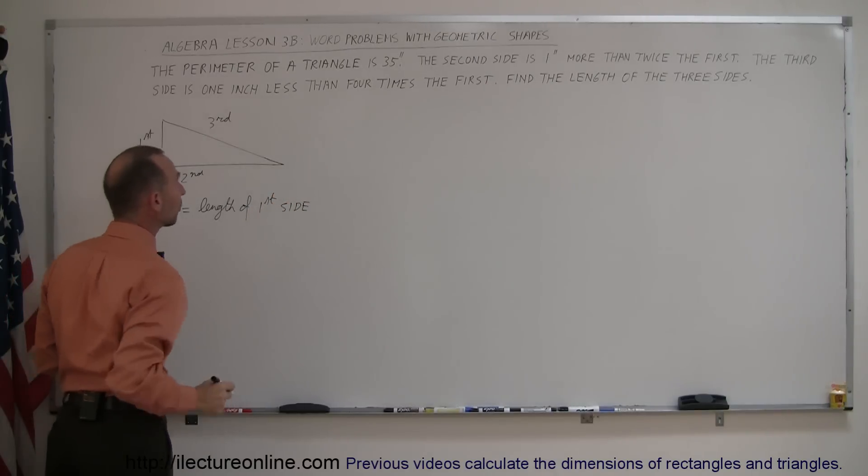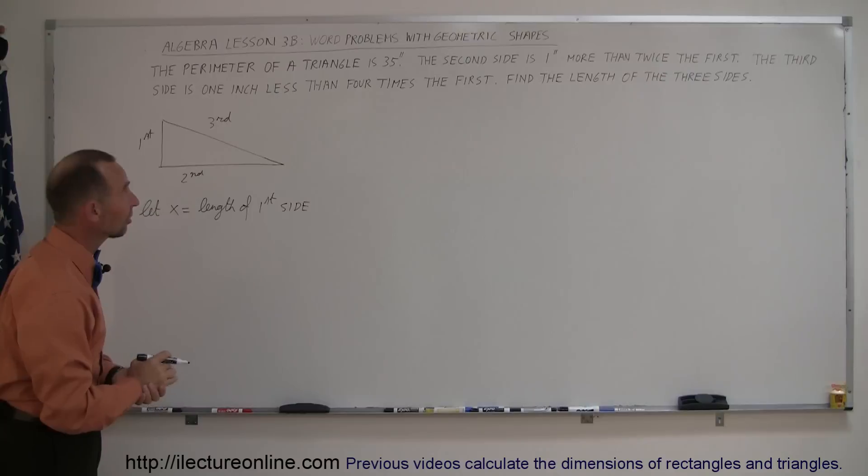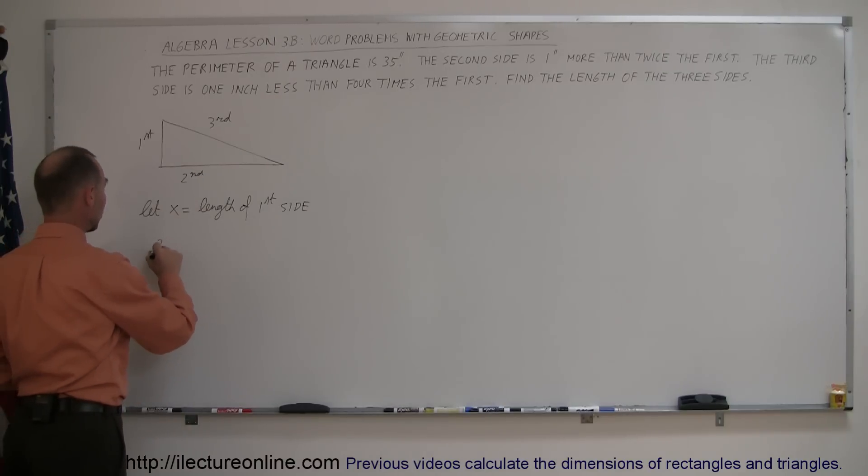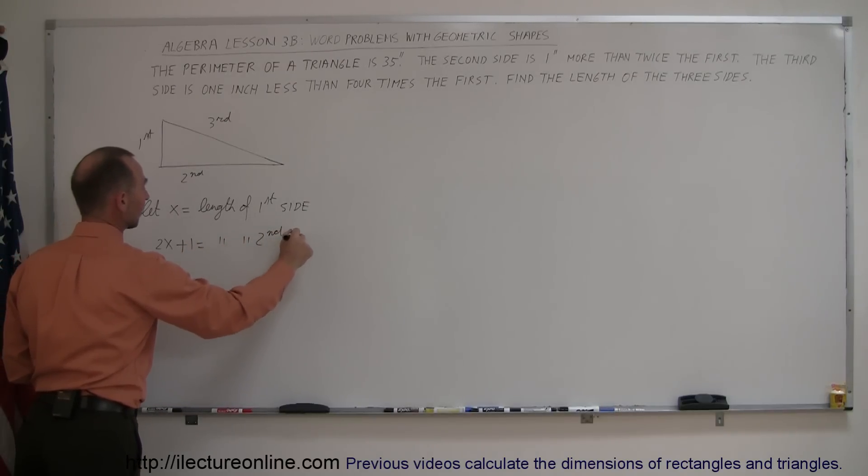Then how would you express the second side? It says here that the second side is one inch more than twice the first. So twice the first, that's 2x, and one inch more would be plus one. So that's twice the first plus one equals the length of the second side.